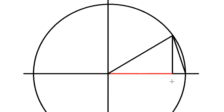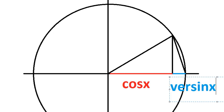The red one in here is about cosine x. And the blue one in here is about versin x.